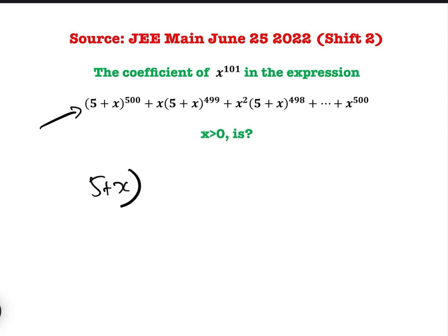5 plus x to the 501 minus x to the 501, because here this is our x to the n minus 1 term, and here we've got x, then x squared, blah blah blah, up to x to the 500.